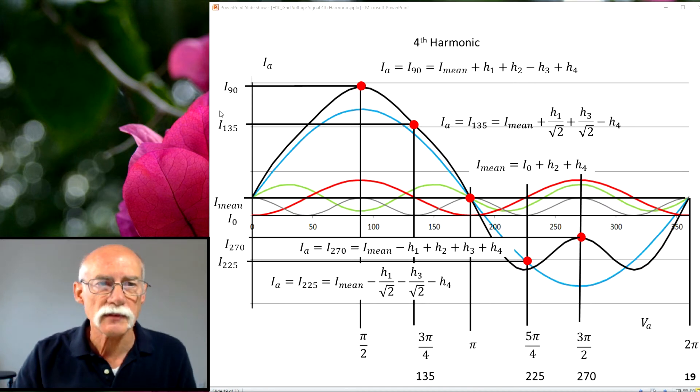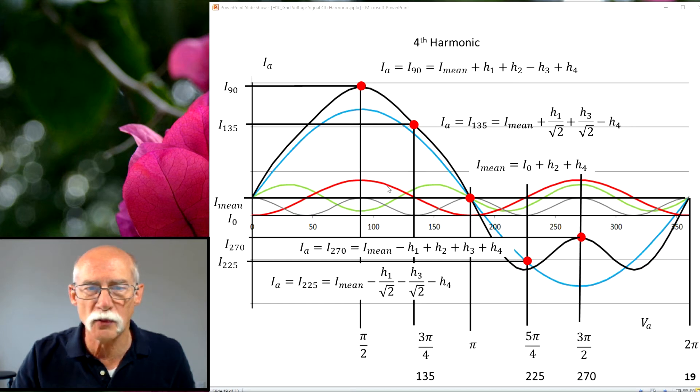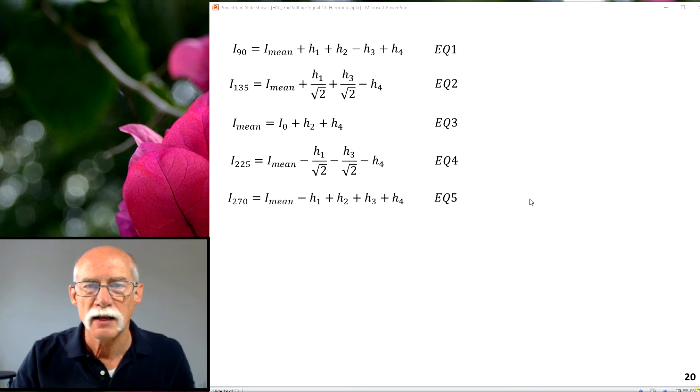And then at the top, i90 is equal, I mean plus h1 plus h2 plus h4 minus h3. Over here, it's plus minus h1 plus h2 plus h3 plus h4. Again, we've picked 135, 225, 270 on purpose because we know where the nodes are hitting. And we know that it's zero for the second harmonic at these points. And now we have five equations that we have to solve.